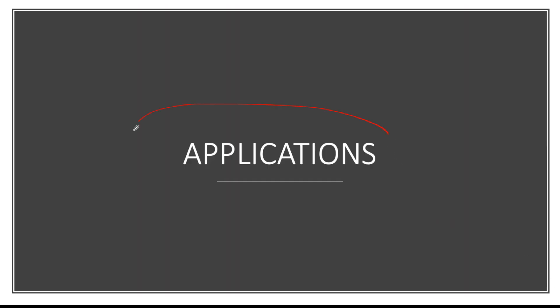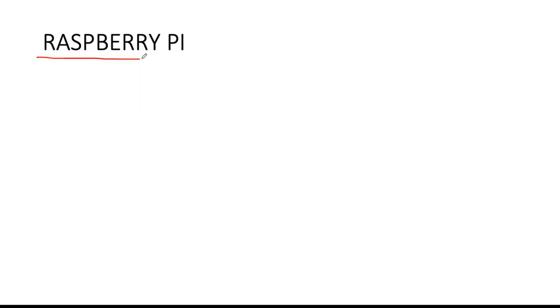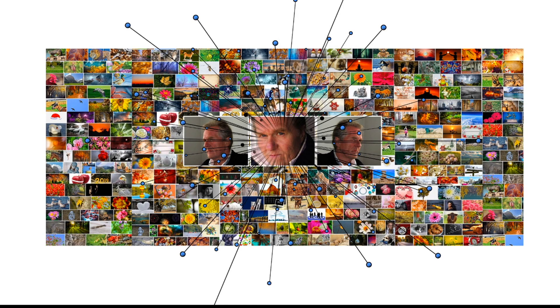Number one on my list is: what type of applications are you planning to do? There are projects and applications that are very specific to Raspberry Pi. First is image processing. Whenever you're doing an image processing project — like image recognition or facial recognition — this is without question a Raspberry Pi project, not an Arduino project. The processing required is too much for the Arduino.